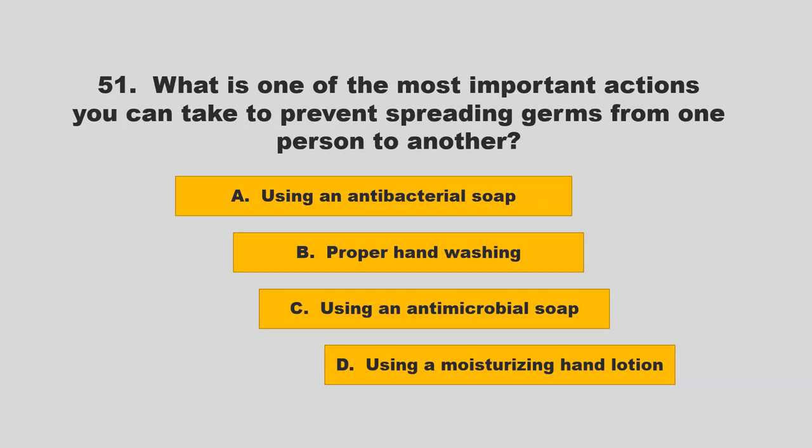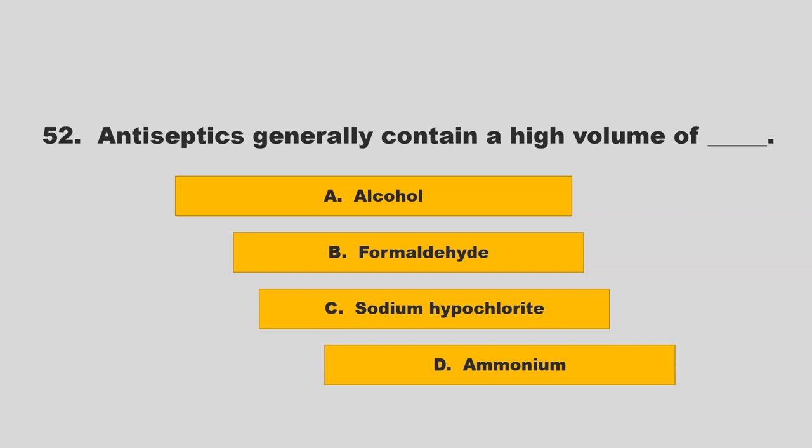What is one of the most important actions you can take to prevent spreading germs from one person to another? Options: using an antibacterial soap, proper hand washing, using an antimicrobial soap, or using a moisturizing hand lotion. The correct answer is B: proper hand washing.